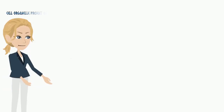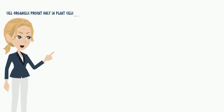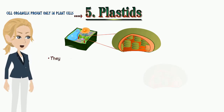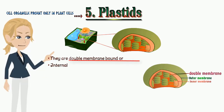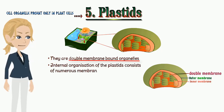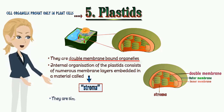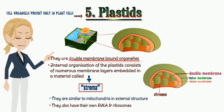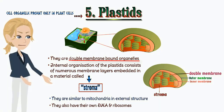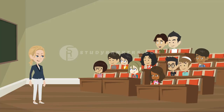Another cell organelle present only in plants is plastids. They are double membrane-bound organelles. The internal organization of plastids consists of numerous membrane layers embedded in a material called stroma. They are similar to mitochondria in external structure and also have their own DNA and ribosomes. Ma'am, are chromoplasts and leucoplasts also plastids? Yes, Rohit, both come under types of plastids.